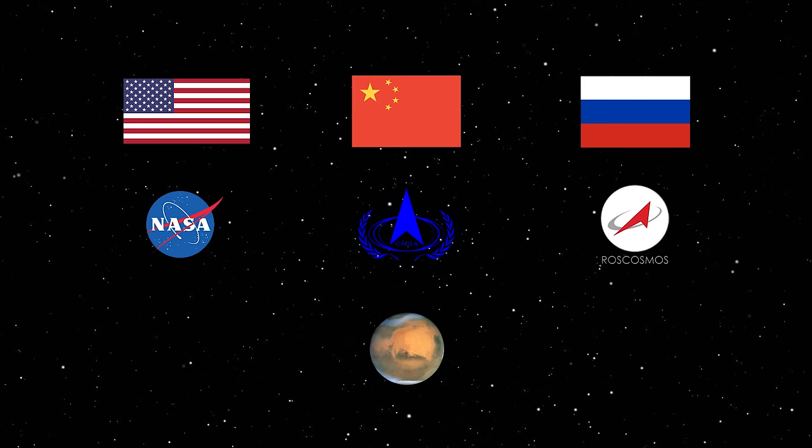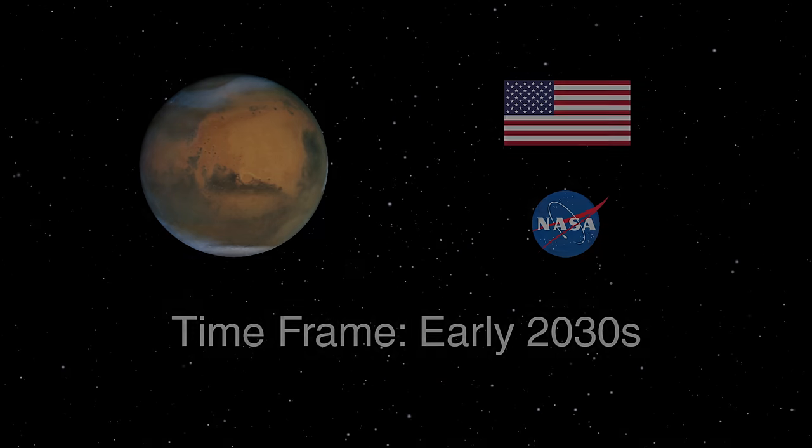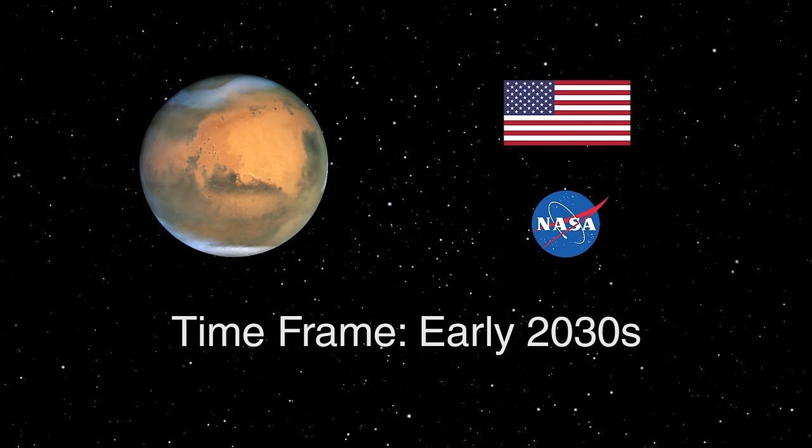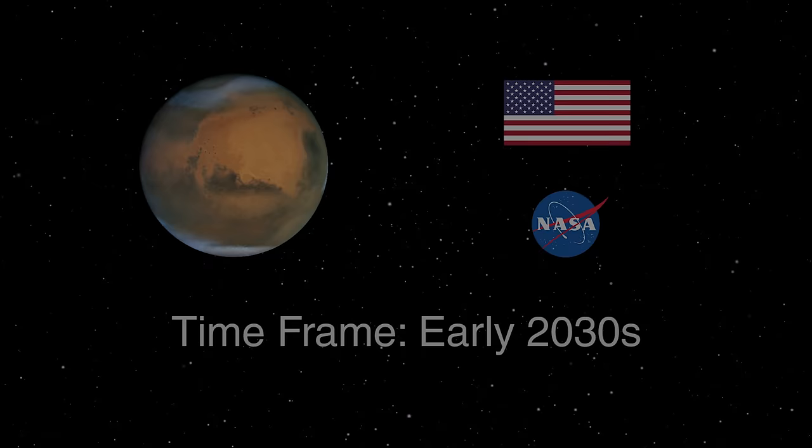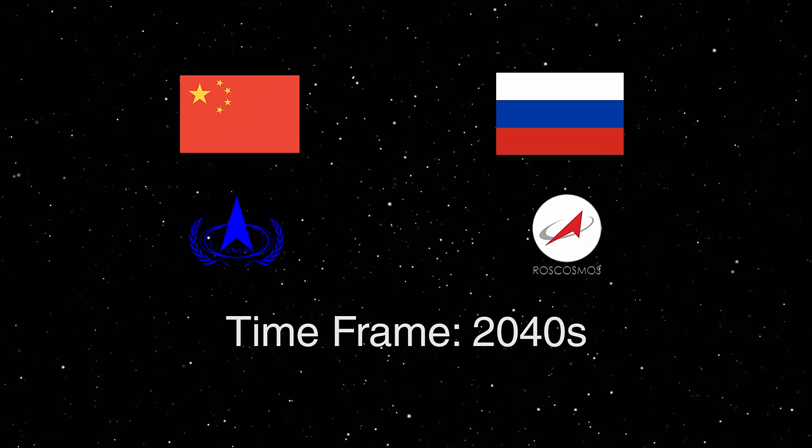NASA's timeline is more conservative, with a robotic payload planned for the late 2020s and a manned mission targeted for the early 2030s. Both the CNSA and Roscosmos are also pushing for manned missions in the 2040s.